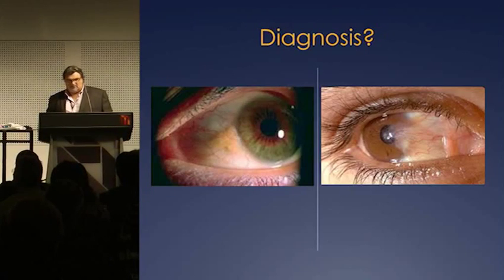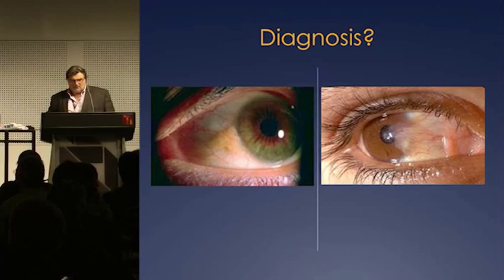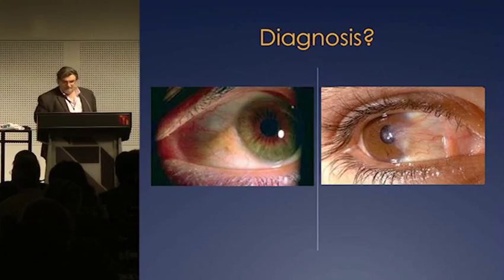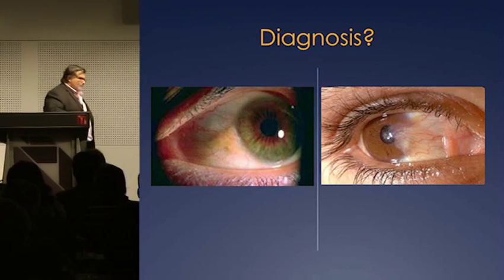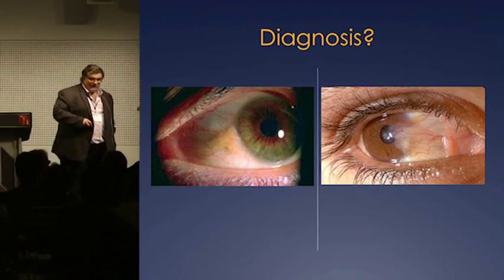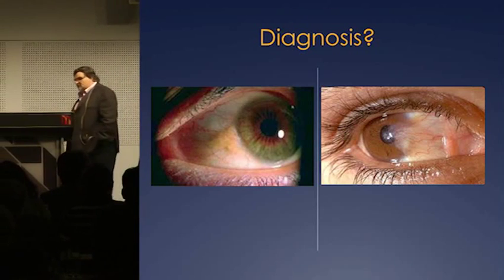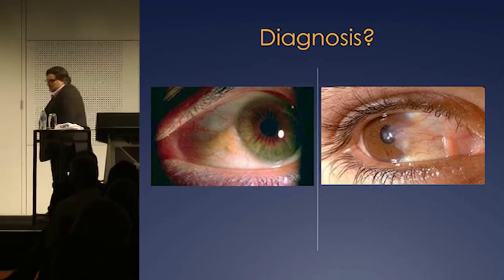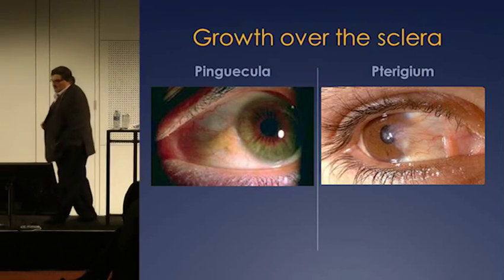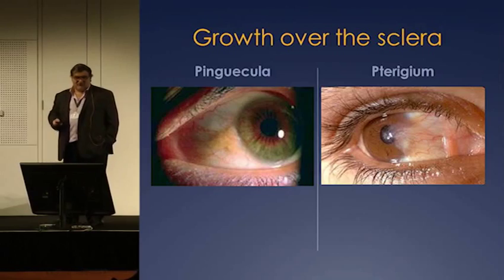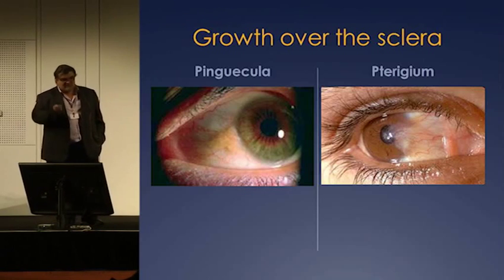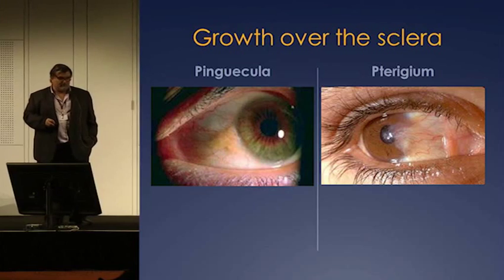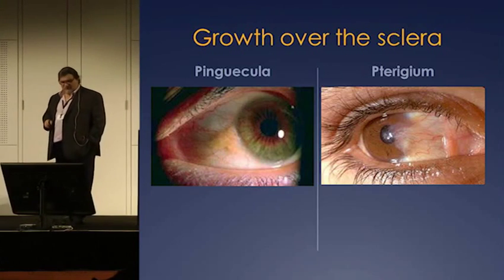All neonates with conjunctivitis get admitted. Now, the one on your left — and the one on your right is called a pterygium. The one that doesn't reach the cornea is called a pinguecula. This is something the ophthalmologist is going to have to take away, and pterygiums can recur. There's not much I'm going to do in the emergency department.